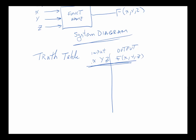Then we do a binary count up from 0-0-0 to the maximum. We have three bits, so we have eight rows. In general, if you have n inputs, you will have 2-to-the-n rows in your truth table. It's important to be very sequential — 0, 1, 2, 3, 4, 5, 6, 7 — to make sure you're not missing any possibility.